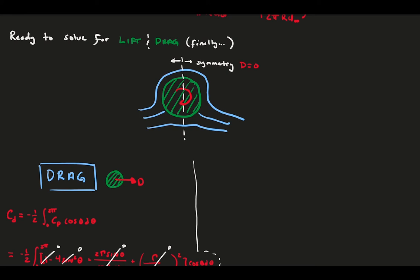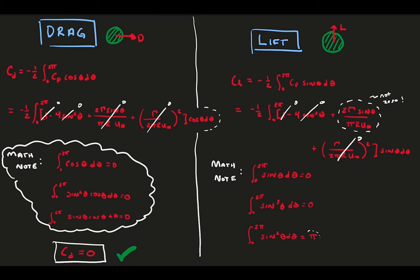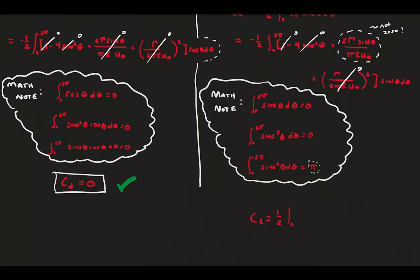Note this is only for an incompressible and inviscid assumption. Now, let's move to the lift with a similar approach. We said the asymmetry about the horizontal axis means there is non-zero lift. Let's see what this is. Take the lift coefficient equation and plug in our pressure coefficient. Again, we have four terms in our integral, and again we'll use some convenient properties of the integrals of sine functions so that we can get rid of all but one of our terms. This is because sine squared does not oscillate about zero. Therefore, it has a non-zero integral.